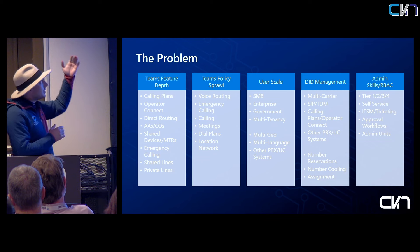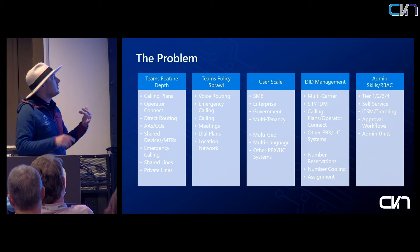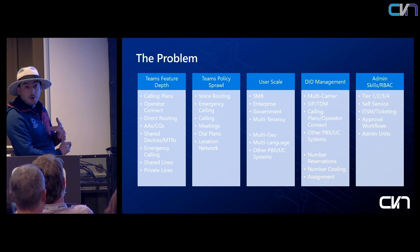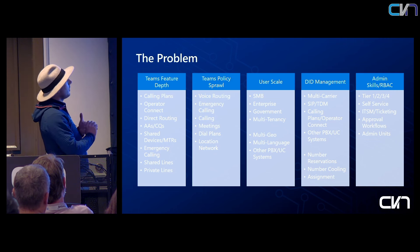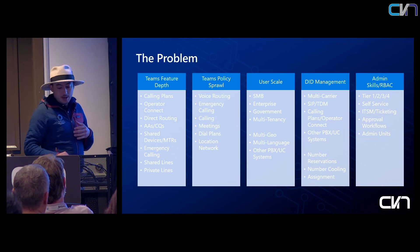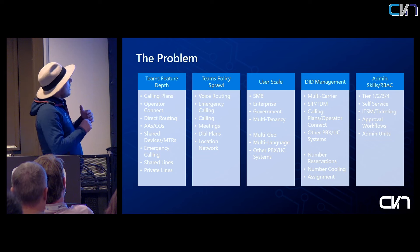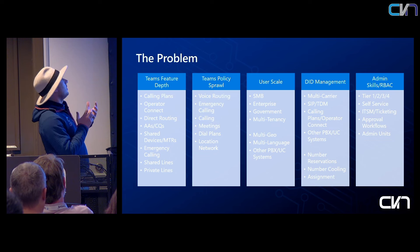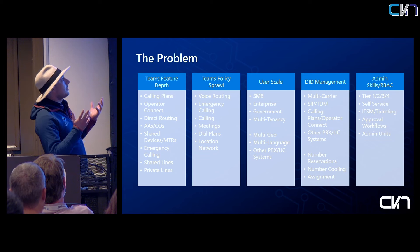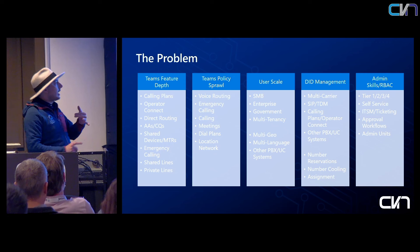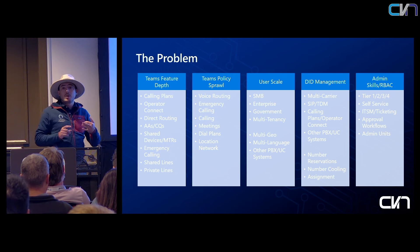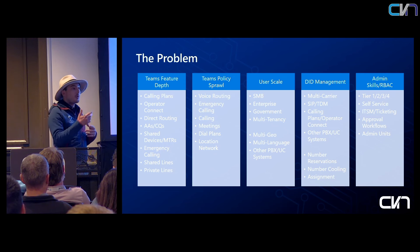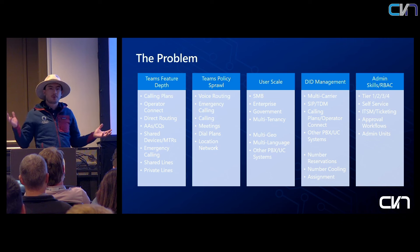We've talked about the policy sprawl — you've got all these different policies: voice routing policies, calling policies, app policies, you name it. Then take the scale: multi-geo, multi-language. Maybe you're trying to integrate with Cisco, maybe with Avaya, maybe you're in a hybrid use case.